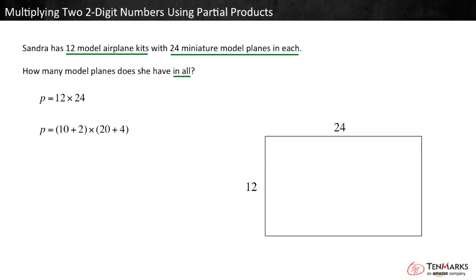To understand, think about a rectangle with a width of 12 and a length of 24. We would multiply the sides to find the area. To make it easier, we could decompose each side, then multiply to find the area of each part.